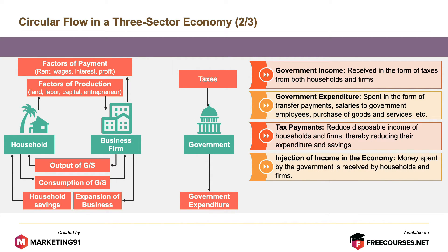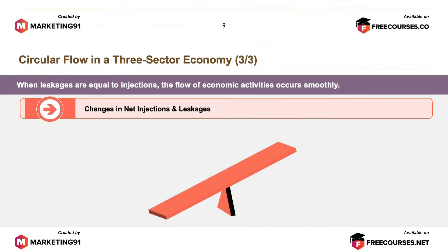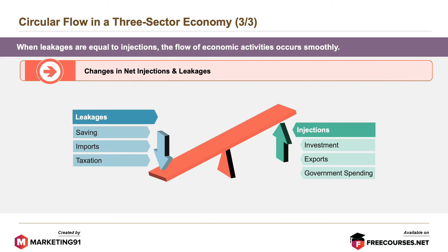Injection of income in the economy — money spent by the government — is received by households and firms. Leakages occurring in the form of savings and taxes in the circular flow of income get injected back in the form of investment and government expenditure. When leakages are equal to injections, the flow of economic activities occurs smoothly.